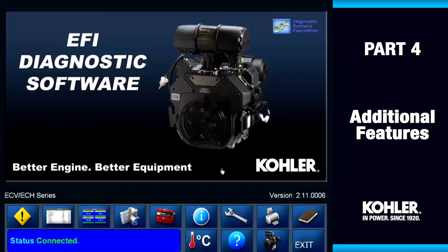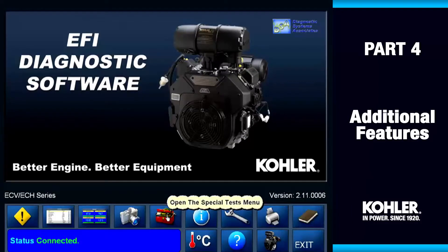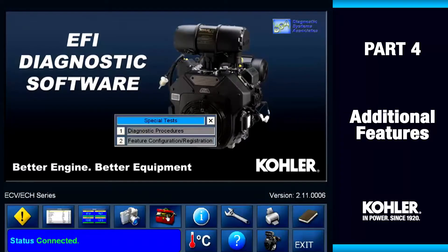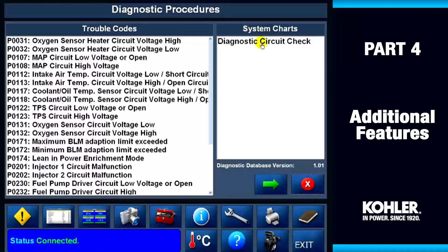The next function on the main control panel is the Special Test button. The Special Test menu displays the available tests or procedures. Here we see options for our example engine, the ECH ECV 630-749. The first option, Diagnostic Procedures, gives you an easy way to look up trouble code information or run the guided diagnostic procedures.